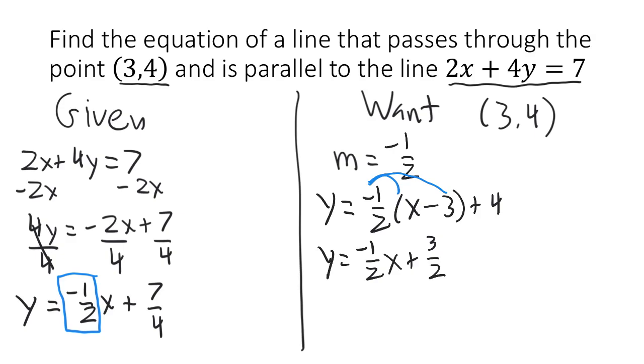And then 4 is the same as 8 over 2. Adding those two numbers together gives us the slope-intercept form of our line. y equals negative 1 half x plus 11 over 2.